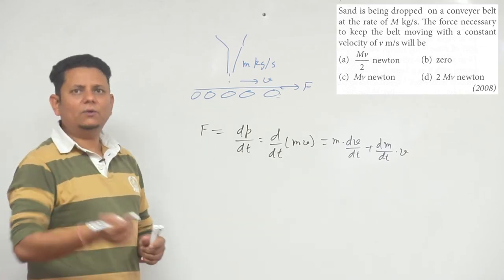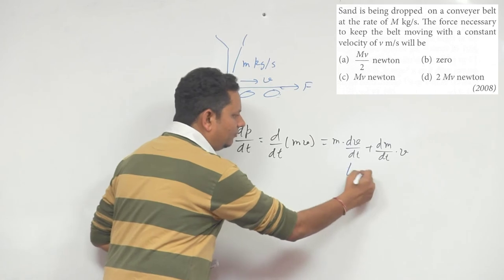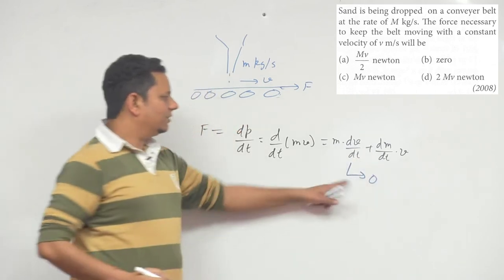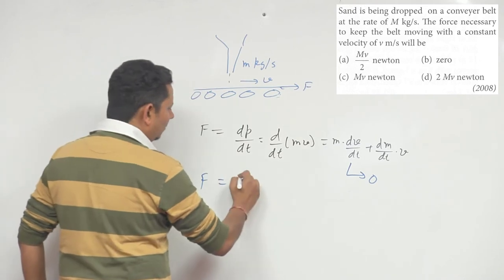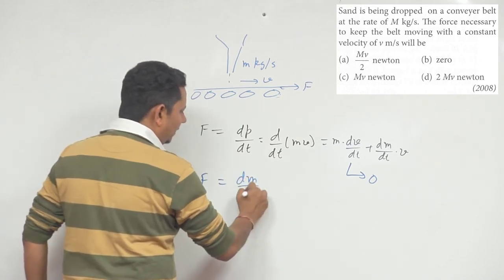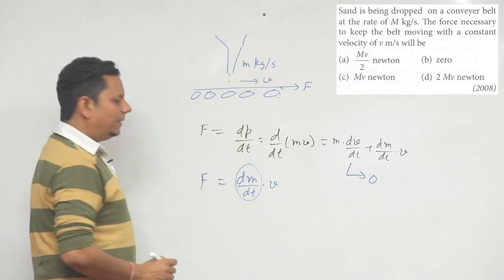Now in this case, v is given as constant. If v is constant, then its differentiation becomes zero. That means the net force required is dm/dt multiplied by v. Now the value of dm/dt is given as M (capital M).